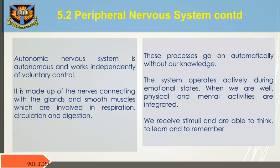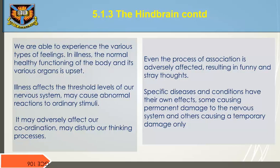When we are well, physical and mental activities are integrated. We receive stimuli and are able to think, learn, and remember, and we can experience various types of feelings. In illness, the normal healthy functioning of the body is upset. Illness affects the threshold levels of our nervous system and may cause abnormal reactions to ordinary stimuli, adversely affect coordination, and disturb our thinking process. Even the process of association is adversely affected, resulting in stray thoughts. Specific diseases and conditions have their own effects, some causing permanent damage to the nervous system and others only temporary damage.